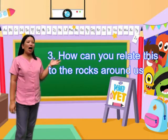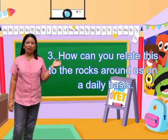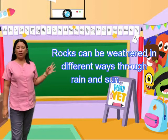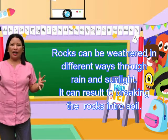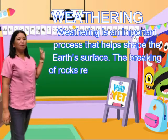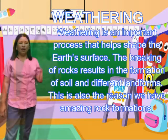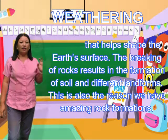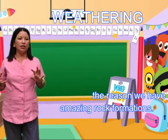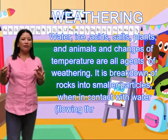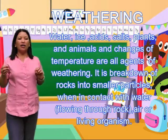For question number 3: how can you relate this to the rocks around us on a daily basis? Rocks can be weathered in different ways — through rain and sunlight — which results in them being ruined, cracked, and turned into soil. So that will be our lesson. It is all about weathering. Weathering is an important process that shapes the earth's surface. The breaking of rocks results in different landforms or formations of soil. This is also the reason we have amazing rock formations. Water, ice, acids, salts, plants, animals, and even changes in temperature are all agents of weathering.